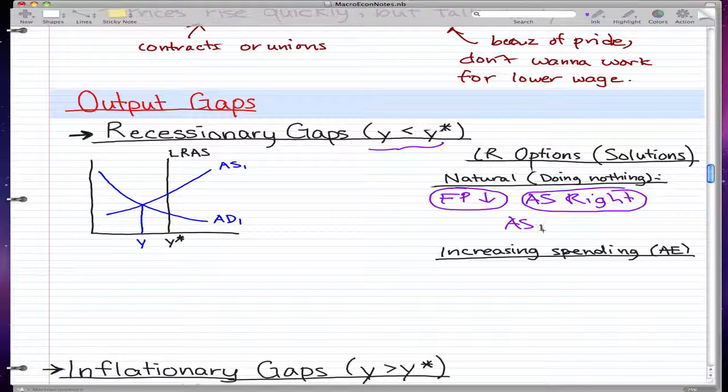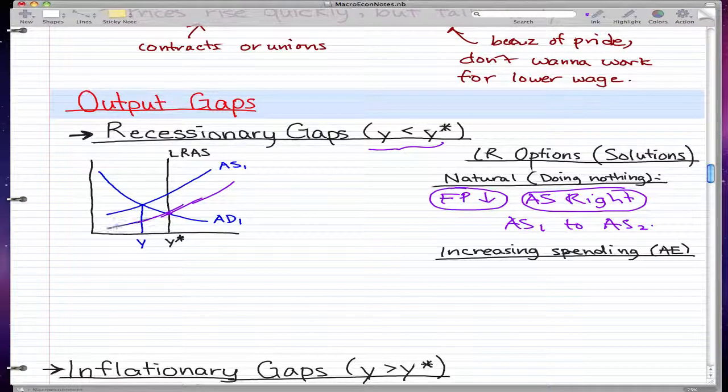AS1 goes to AS2, and on the graph it will look like this: AS1, and AS2 will be here. That's the first option of making equilibrium. At this point AS is equal to AD, and AD is equal to LRAS.